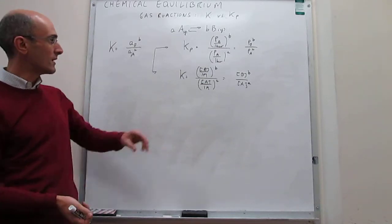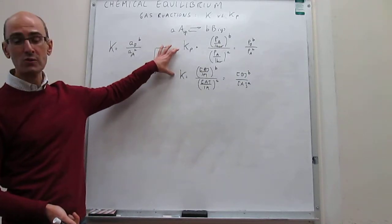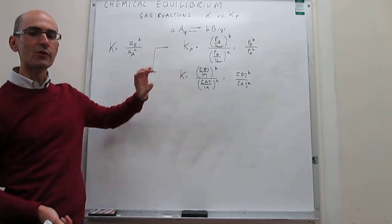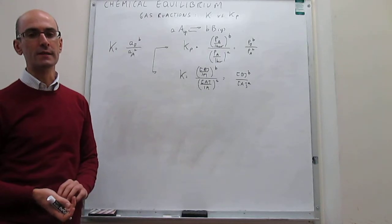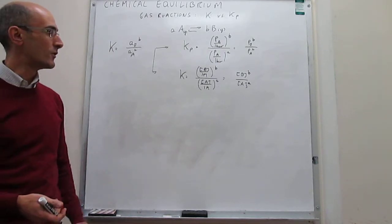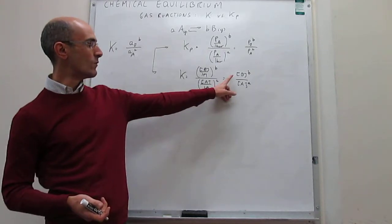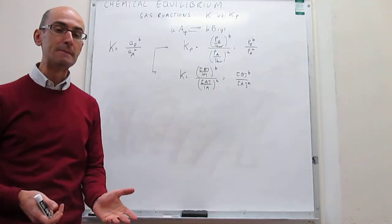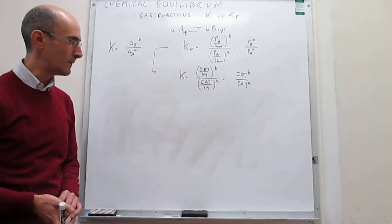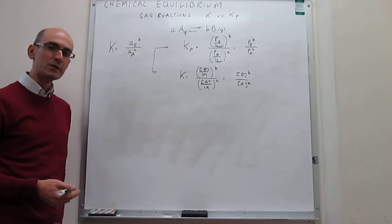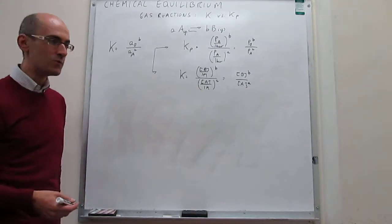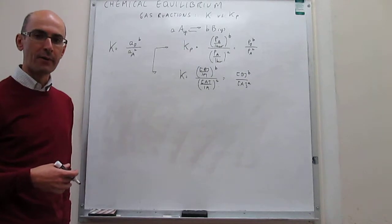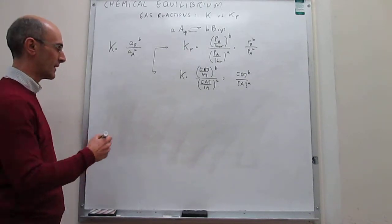These two equilibrium constants will have different values, but you can interconvert between them relatively easily because for a gas the relationship between molar concentration and partial pressure is very simple. You can use the ideal gas equation of state to see how that relationship works.